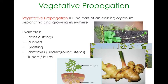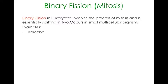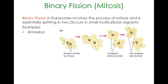Binary fission using mitosis is a little bit different from binary fission in prokaryotes. It basically involves mitosis occurring in a eukaryotic cell, and it occurs in small multicellular organisms, whereas binary fission in prokaryotes occurs in a single-celled organism. It uses mitosis — so the prophase, metaphase, anaphase, and telophase. The best example is the amoeba, which will divide using mitosis and split into two new amoeba cells. That goopy-ish organism can split in half.